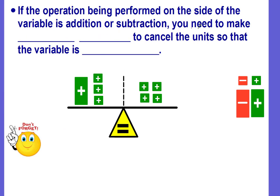If the operation being performed on the side of the variable is addition or subtraction, then you need to make zero pairs to cancel the units so that the variable is then isolated. You'll recall we learned about zero pairs when we were doing integers. A positive and a negative make a zero pair. So that's what we want to do here.